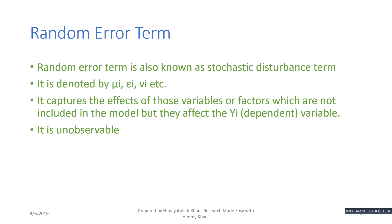The random error term is also known as the stochastic disturbance term. It is usually denoted by μ_i, ε_i, v_i, e_i, and so on. It basically captures the effects of all those variables or factors which affect the dependent variable but are not included in the model. That is why the error term is unobservable — we may not know about all those variables, and even if we do, we may not have data on them, so we cannot include all of them in the model.